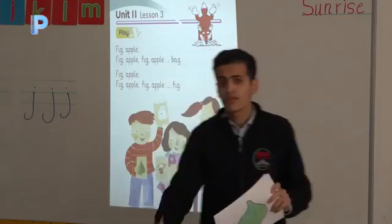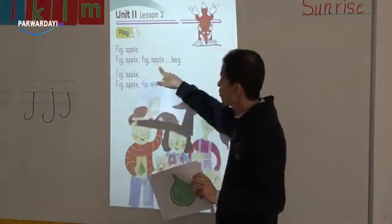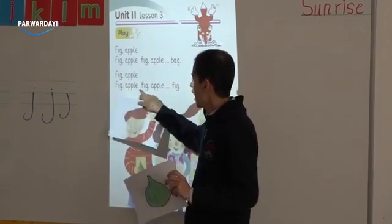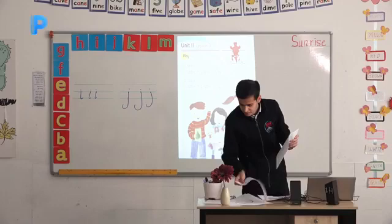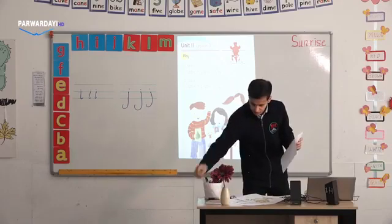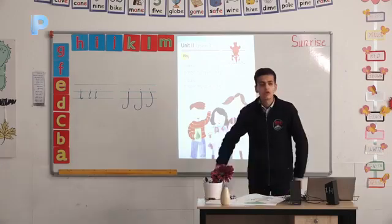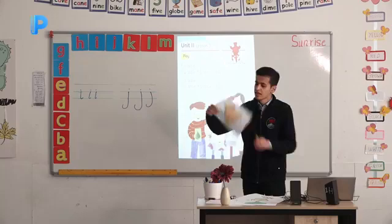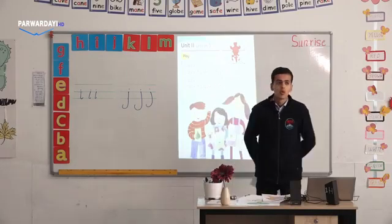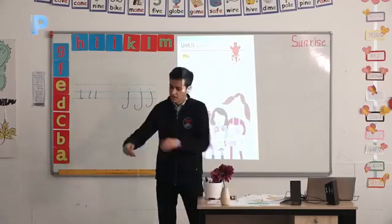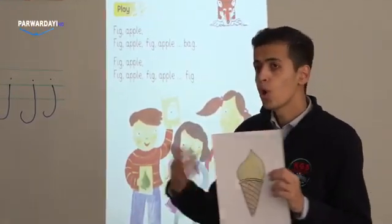Then, you need to say another name, another picture. For example, fig, apple, fig, apple, fig, apple, bag. Or, fig, apple, fig, apple, fig, apple, girl. Let's do another one. Yeah. So, we're going to put down the two pictures because we already know it's fig and apple. So, we're going to say fig, apple, fig, apple, hen. Let's do it with another picture. Yes, this one. We say fig, apple, fig, apple, ice cream. So, I want you to play this game at home with your siblings or your parents or your friends. And then, you will get very good at knowing all the words in your books.